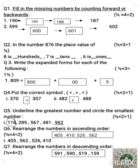Coming to question number five: underline the greatest number and circle the smallest number. In number one you have 118, 289, 567, 481, and 962. Among these numbers, the greatest number you have to underline and the smallest number you have to circle.